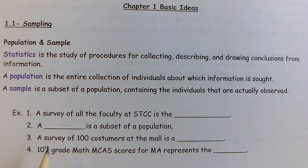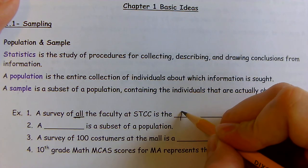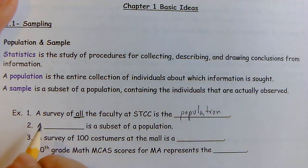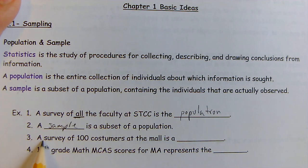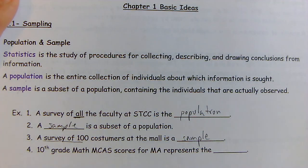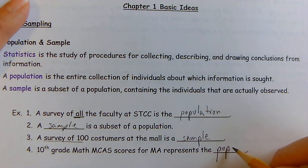Sometimes it's in the wording to identify whether they're talking about a population or a sample. For example, a survey of all the faculty at STIC is the population. A survey of a hundred customers at the mall is a sample — it does not cite all customers, it's a survey of a hundred of them. All of the 10th grade math MCAS scores for Massachusetts is also a population.